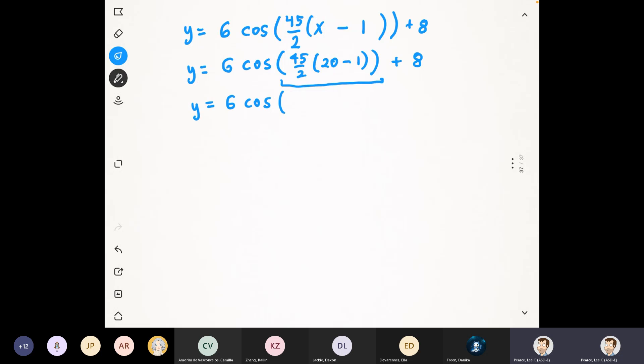And 20 minus 1 is 19. Then you can do 19 times 22.5. So you're going to have y equals 6 times the cosine of 427.5 plus 8. And next step, you're just going to use your calculator and get the cosine of that angle. So cosine of 427.5 in degree mode is going to give you y equals 6 times 0.3827. Now if you do the multiplication times that decimal by 6 and then add on 8, you're going to wind up with approximately - now at this point, notice that when I got the cosine of the angle, I rounded to four decimal places. But your final answer, you can go down to like one or two decimals.